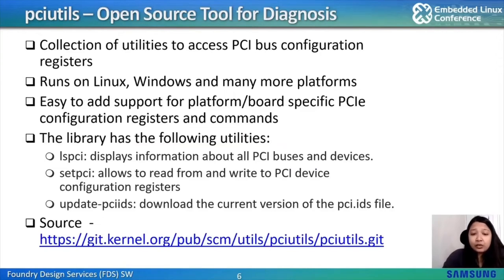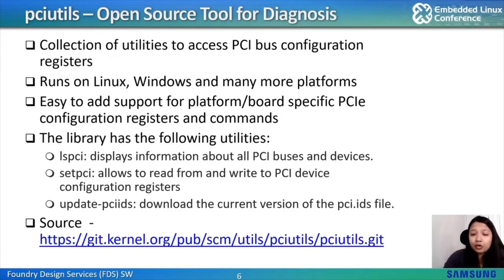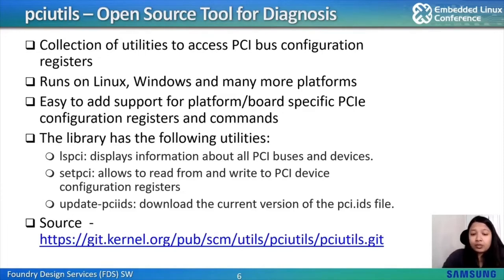So what is PCI utils? PCI utils is a package that contains a library for portable access to PCIe bus configuration registers and several utilities based on this library. It runs on Linux, FreeBSD, OpenBSD, Windows, Darwin, CygWin, with ongoing efforts to add support to other systems. The two most commonly used utilities are LSPCI and SETPCI. LSPCI displays information about all PCIe buses and devices, and SETPCI allows reading from and writing to PCIe device configuration registers. The open source link for the library is provided in the slide.